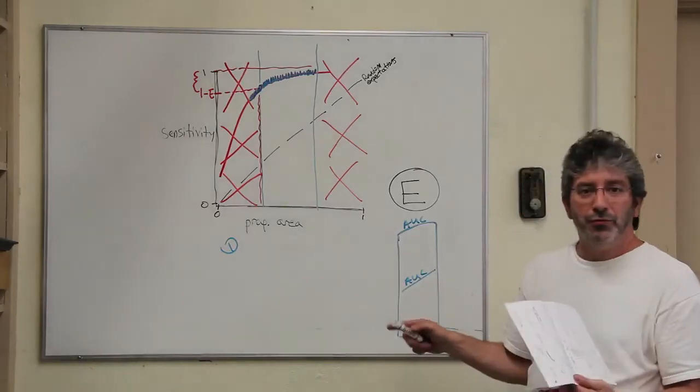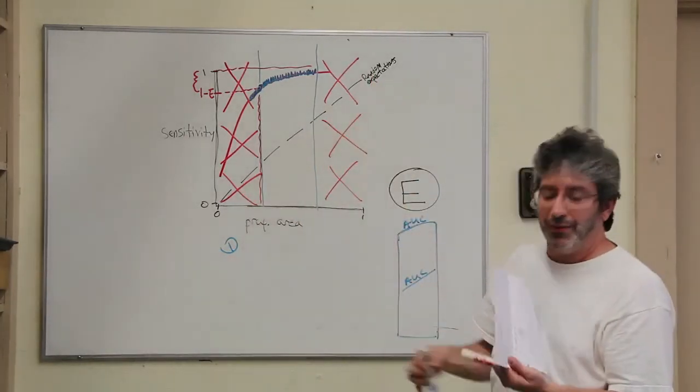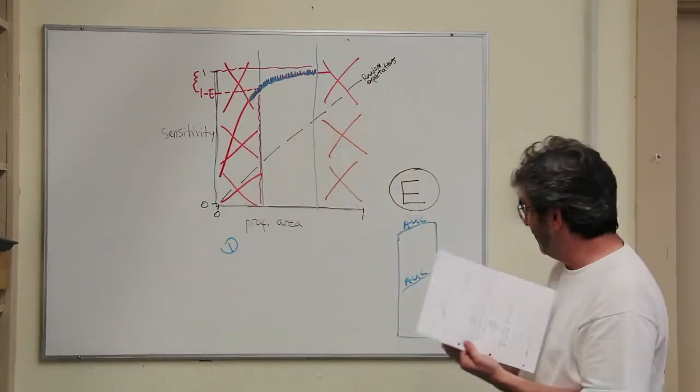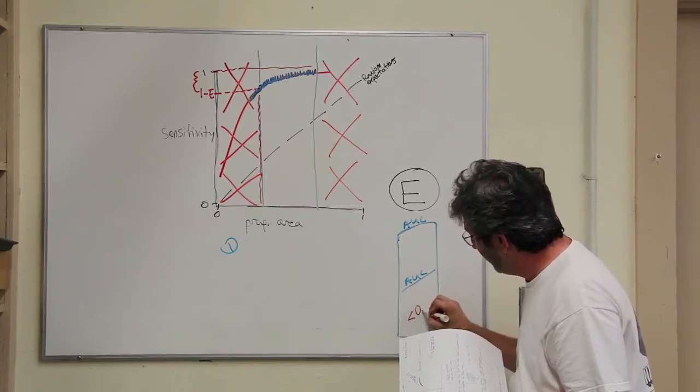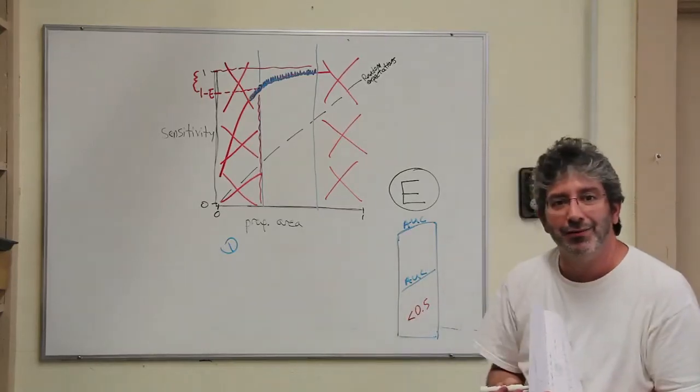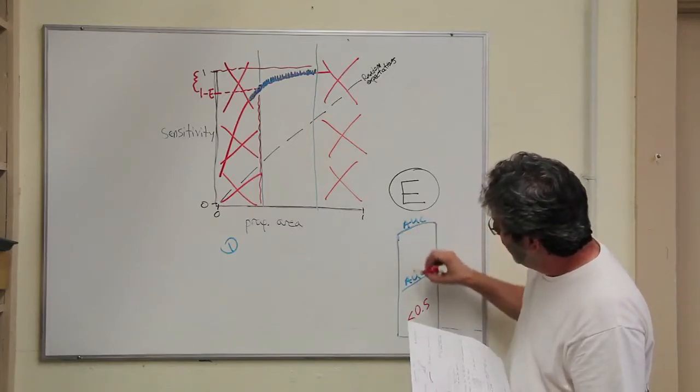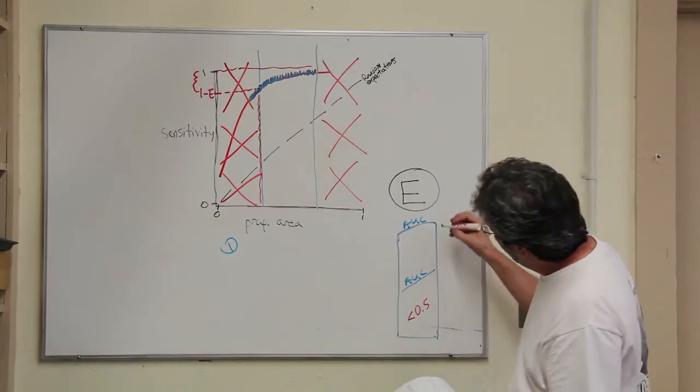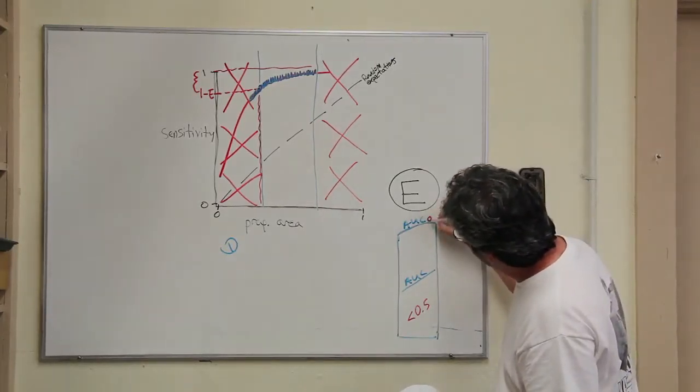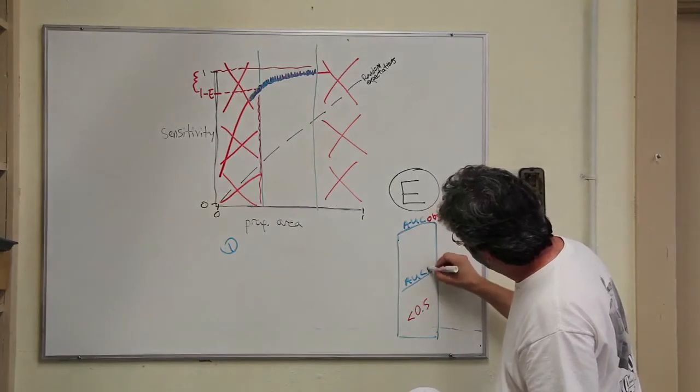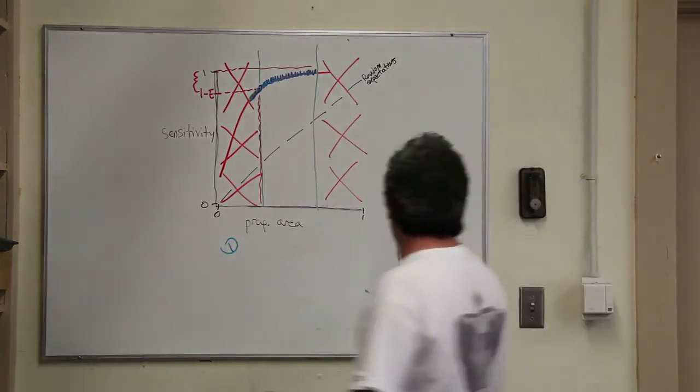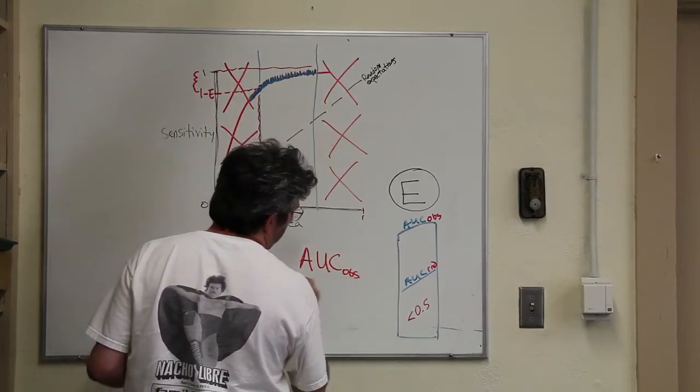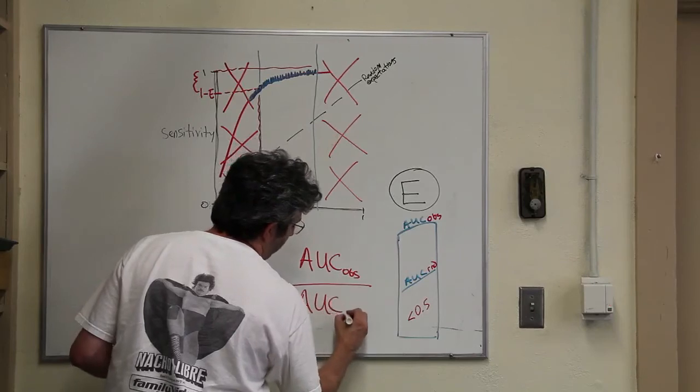Now, the problem is, remember that in the original ROC analysis, our AUC for the random expectations was 0.5. Now it's something less than 0.5 and I don't really know what it is. And this is going to be something greater than or equal to that. So what we can do is we can call this AUC observed and this is random. And so we can produce a ratio, AUC observed to the AUC of the random.